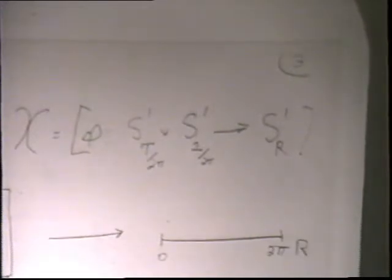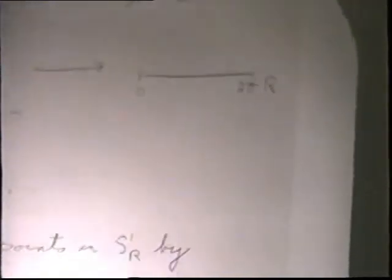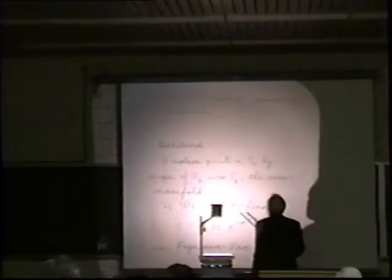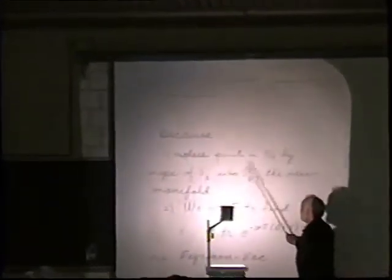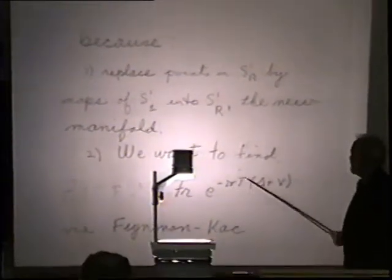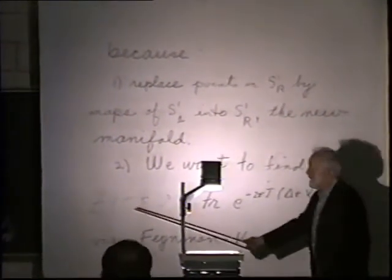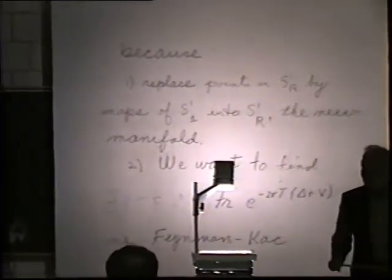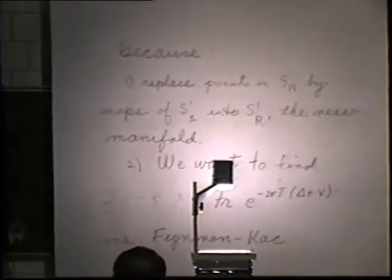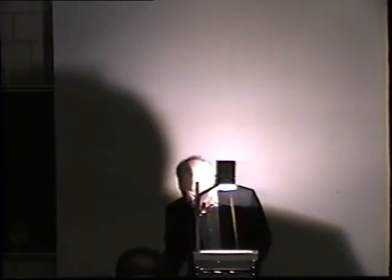This represents loops evolving in time and coming back on themselves — closed loops in that space — taking period T to come back. We are talking about replacing points by maps of S^1 into a circle of radius R, and we want to find the trace of e to the minus 2πT times this Schrödinger operator via Feynman-Kac. This would be the partition function Z(T, R, α'), which we want to compute.